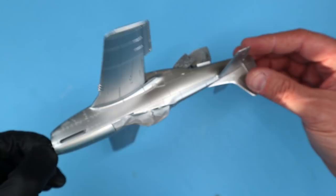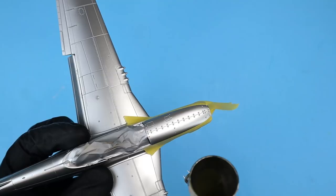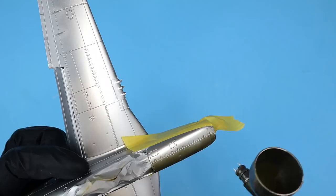Now it's time to apply the olive drab anti-glare panel. I masked that off with Tamiya tape and sprayed it with a coat of Tamiya olive drab.